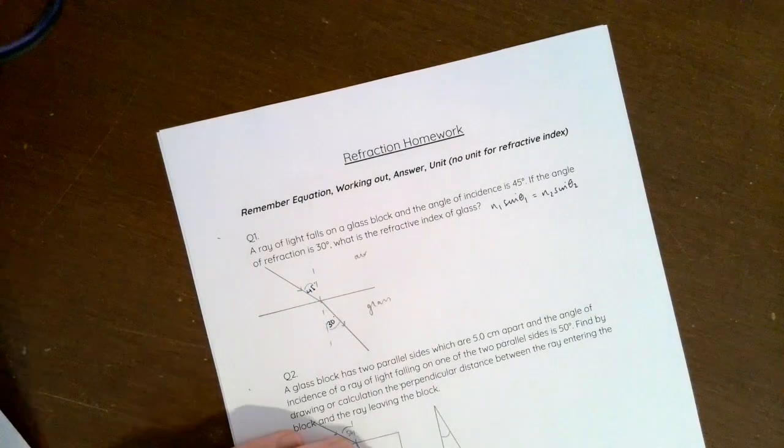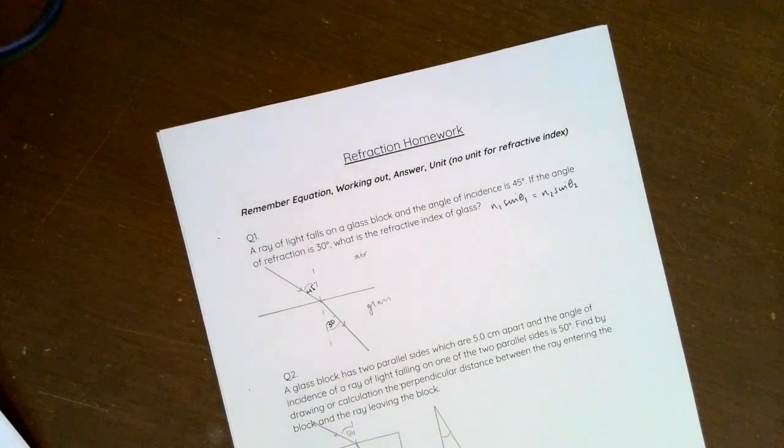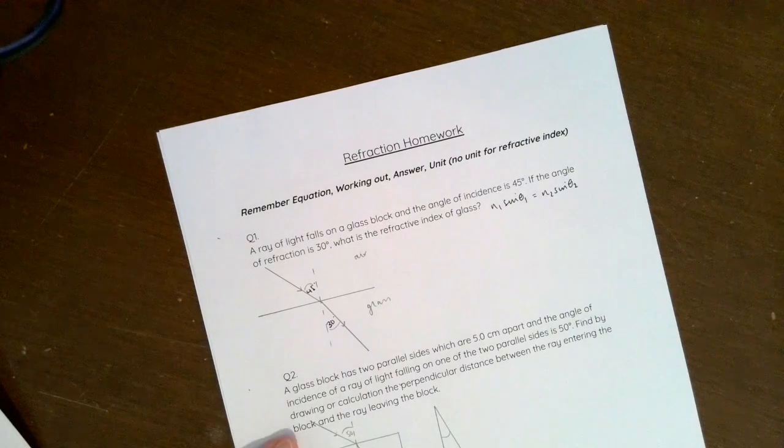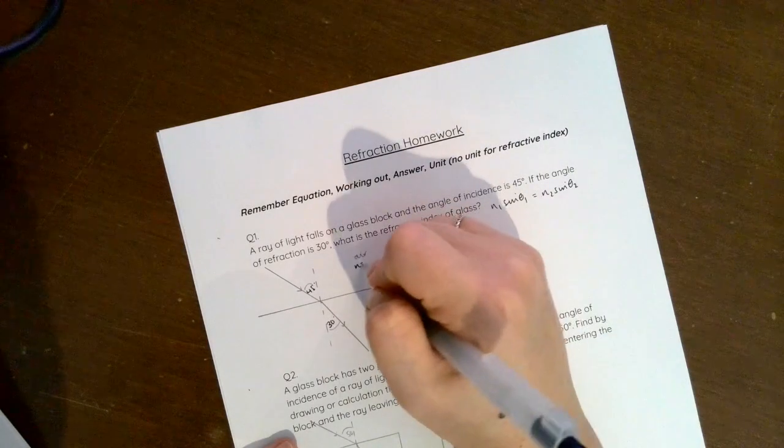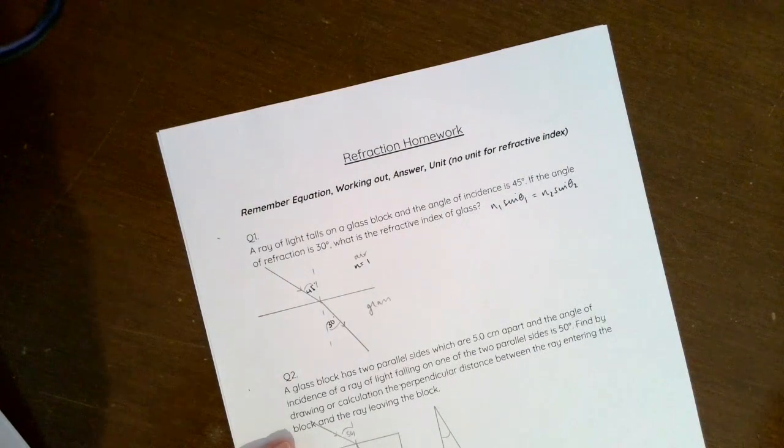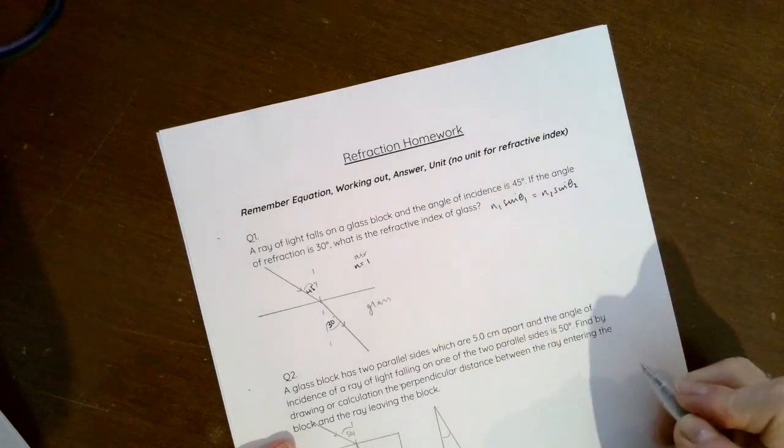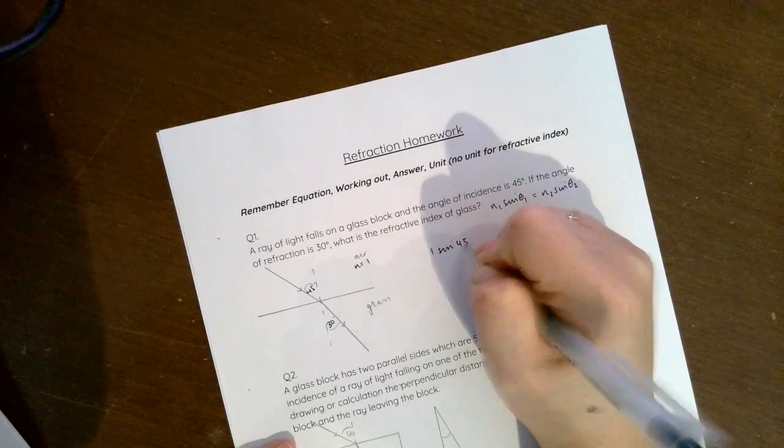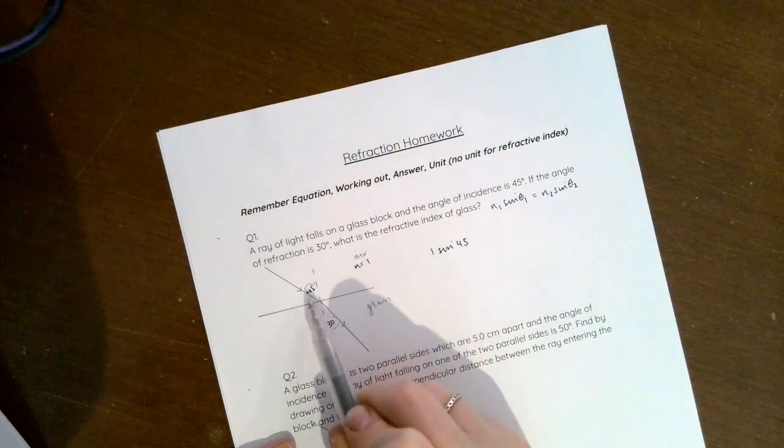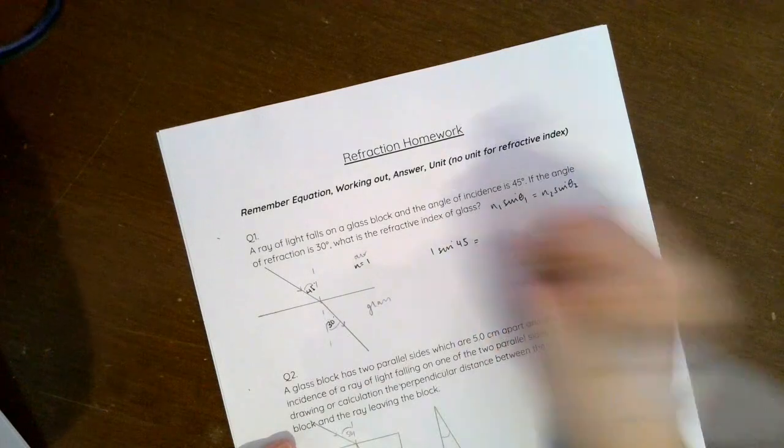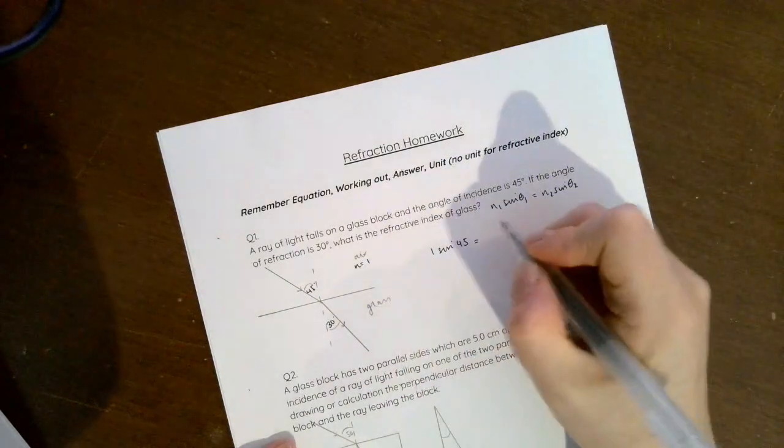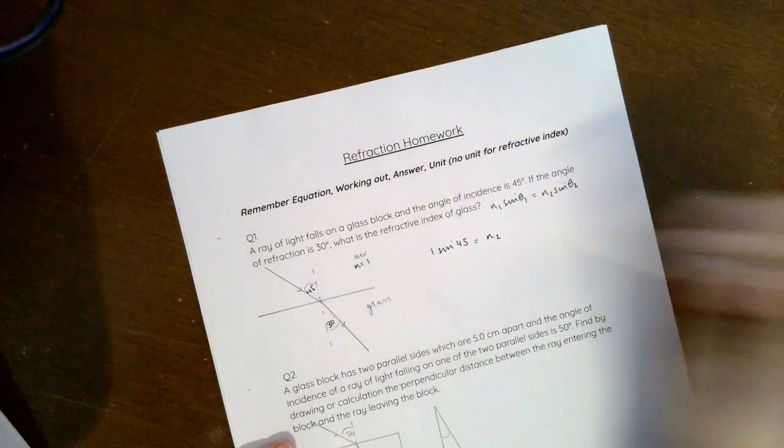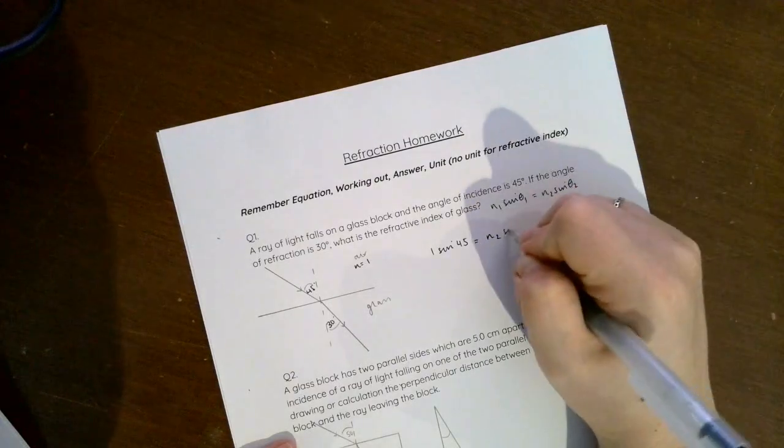The angle of refraction, so the angle after it's entered into the glass, is 30. We know and we should remember that n is 1 in air, and that's going to help us. So that means that we have 1 sin 45 because we've got n₁ sin θ₁.